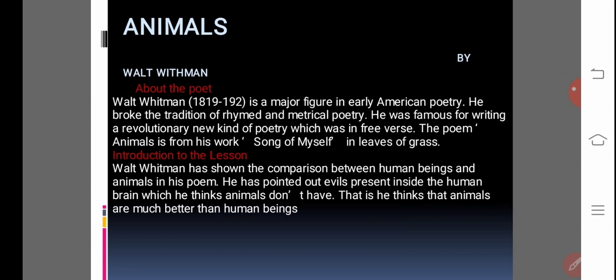Now let us go ahead first with the poet, that is Walt Whitman. His birth was in 1819 and he died in 1892. There is a mistake, it is written only 192, so 1892 you should consider. He is a major figure in early American poetry. He broke the tradition of rhymed and metrical poetry. He was famous for writing a revolutionary kind of poetry which was in free verse. The poem Animals is from his work Song of Myself in Leaves of Grass.